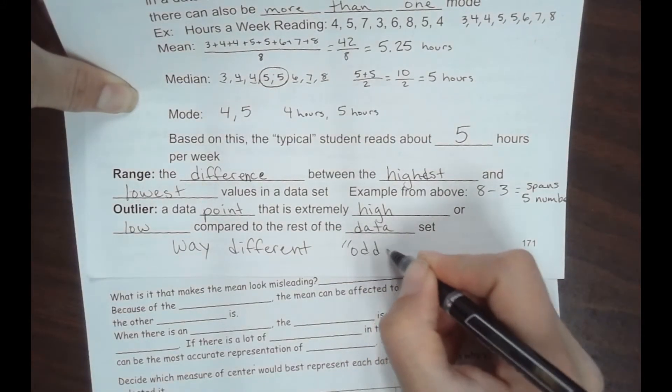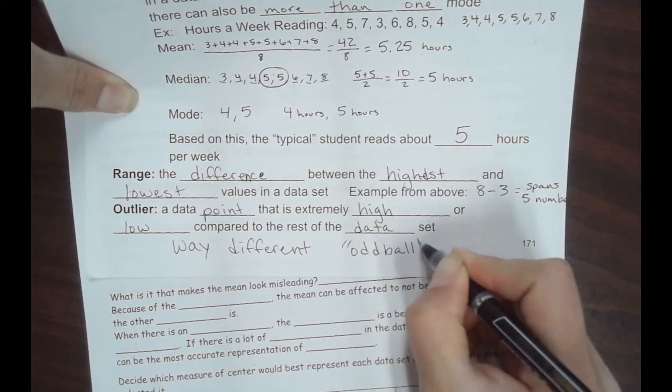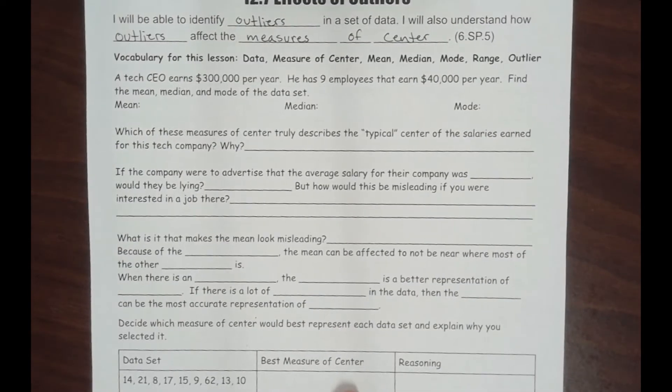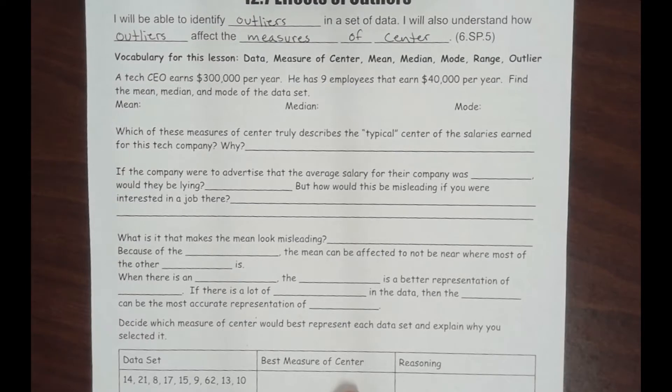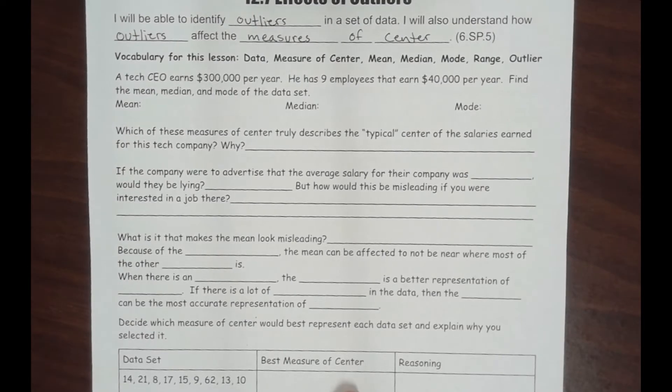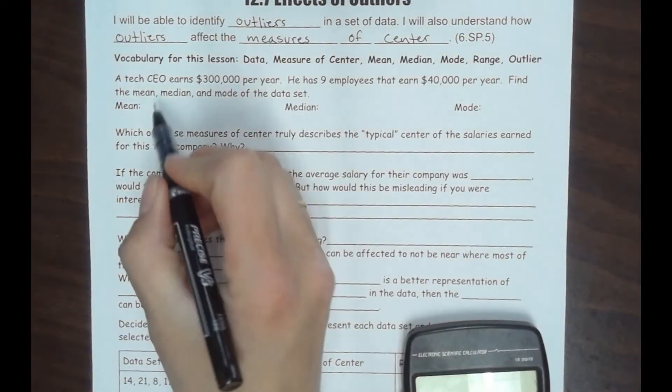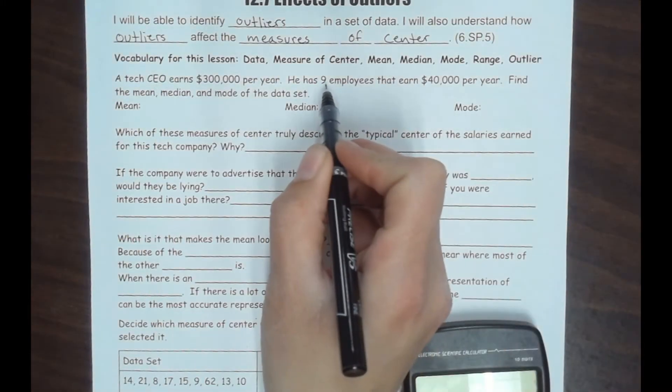So let's look at this example. A tech CEO earns $300,000 per year. He has 9 employees that earn $40,000 per year. Find the mean, median, and mode of the data set. Okay, you're going to want your calculator for this one. So we have one CEO and nine employees. How many total people are there?